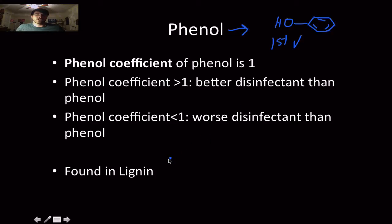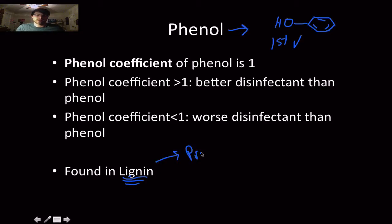A fun fact is that phenol is found in lignin. Lignin is the primary structural compound — alongside cellulose — that makes wood in plants strong and woody. It is found in lignin, and this is something that protects plants from bacteria.